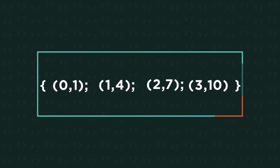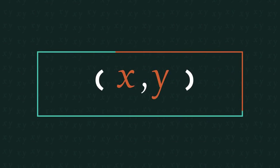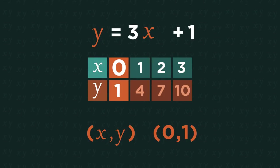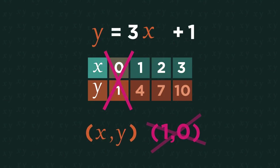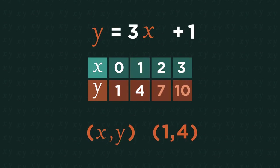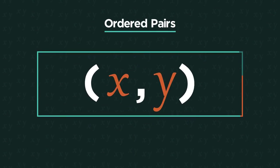We can then write out the values as ordered pairs. It's really important that we always write the x value before the y value. So 0, 1, not 1, 0. Then 1, 4 and so on. Writing the pairs as x comma y is what makes it an ordered pair.